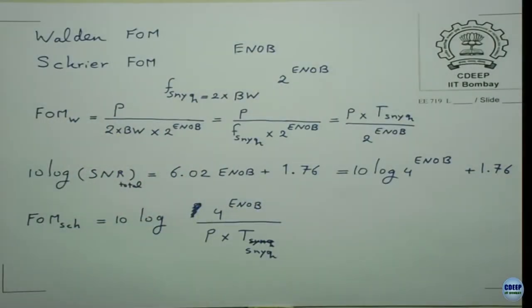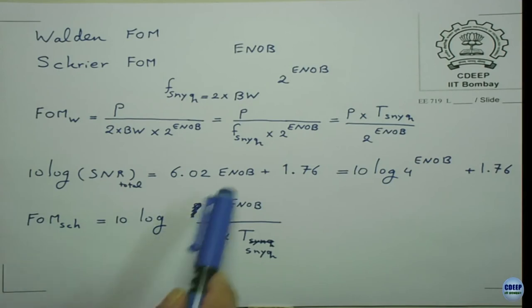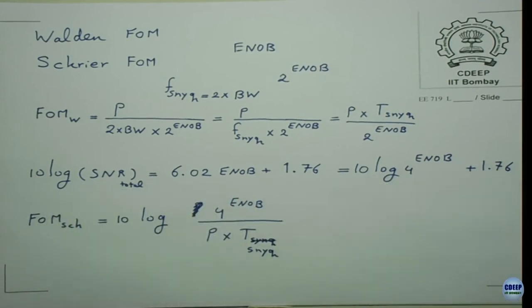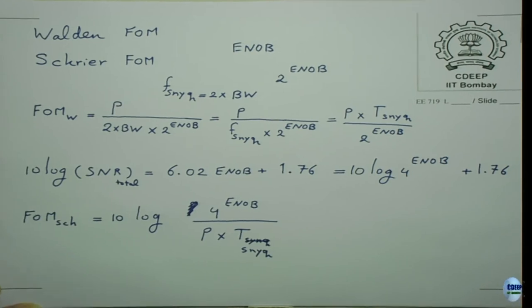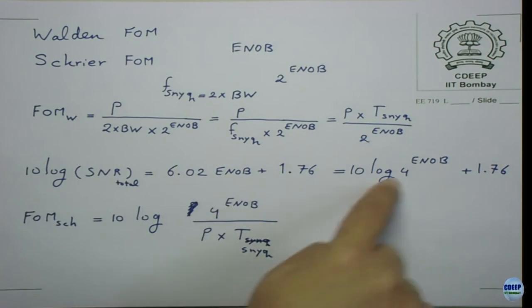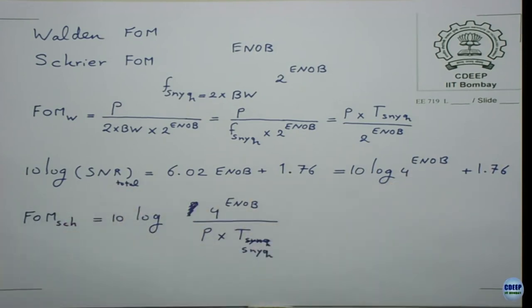Since offset and gain errors are not our primary concern, we can ignore a few codes at the beginning and end and focus on the middle range. The triangular waveform is periodic, so we can collect samples over many cycles. In measurement, you need many repetitions because single measurements are not reproducible — measurement is an error-prone process.